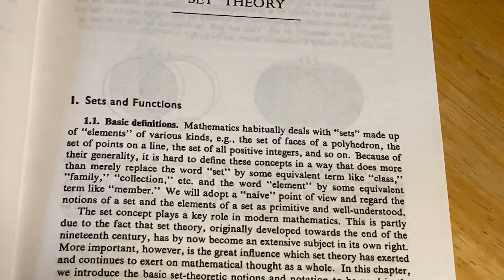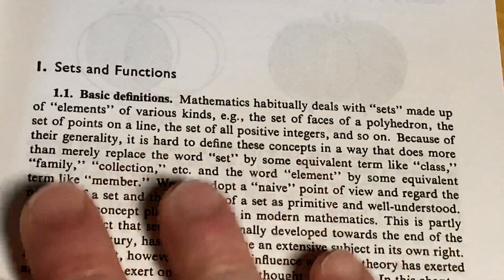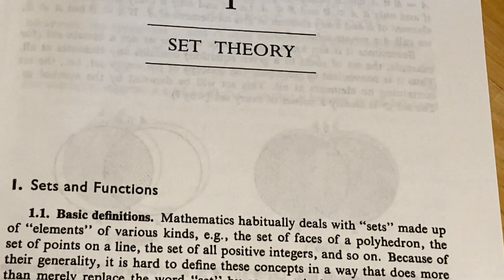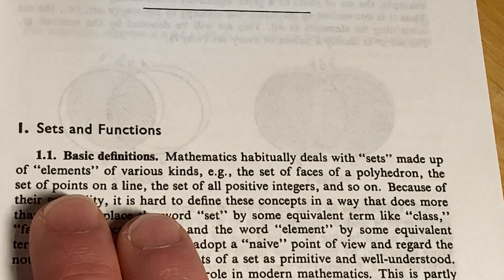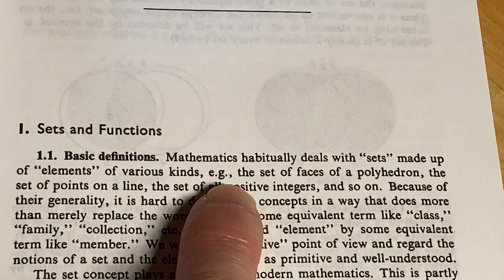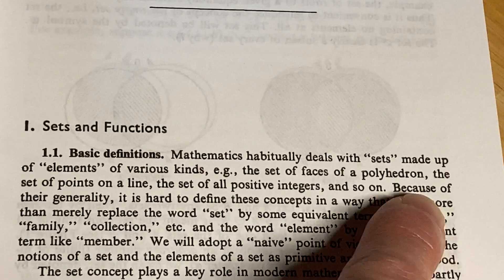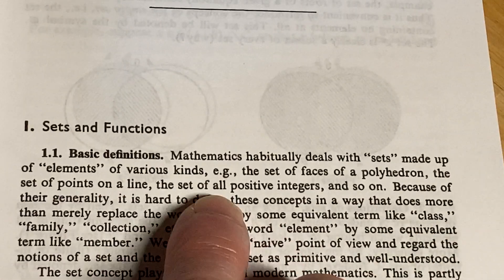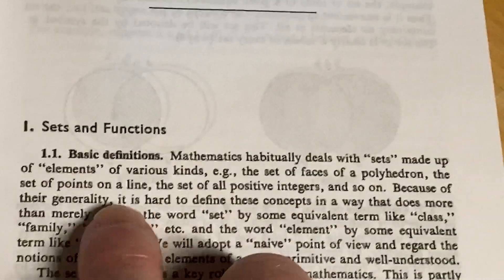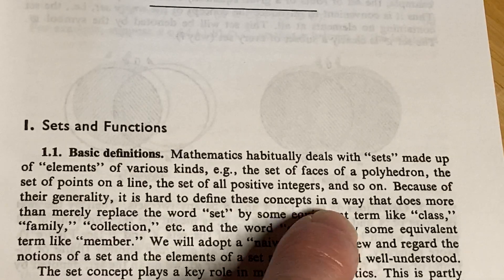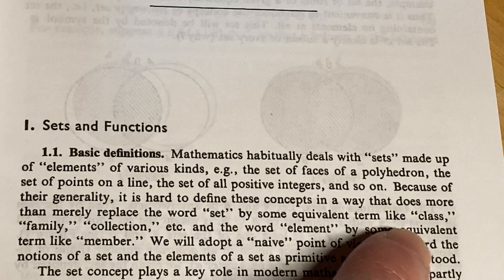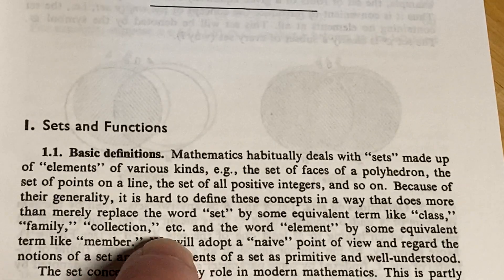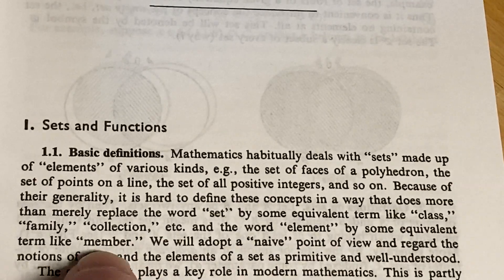So here's what starts. Set theory, sets and functions, basic definition, and this is something that you probably already know. If you don't, it's worth learning. Mathematics habitually deals with sets made up of elements of various kinds, e.g. the set of faces of a polyhedron, the set of points on a line, the set of all positive integers, and so on. Because of their generality, it is hard to define these concepts in a way that does more than merely replace the word set by some equivalent term like class, family, collection, etc. And the word element by some equivalent term like member.